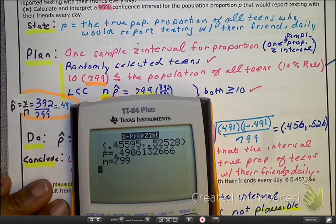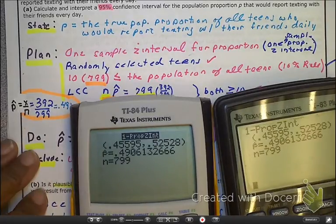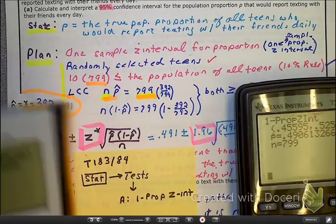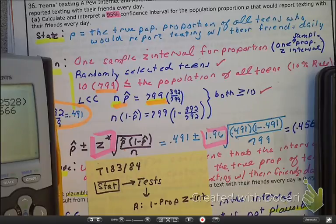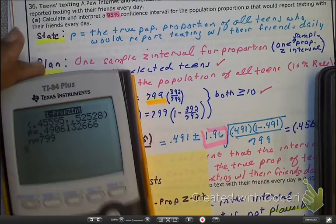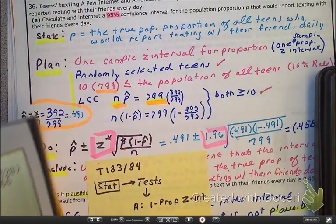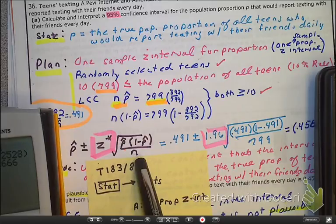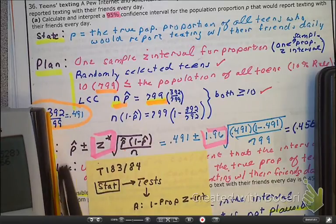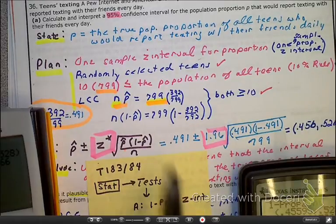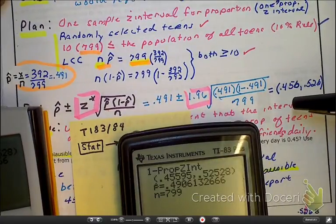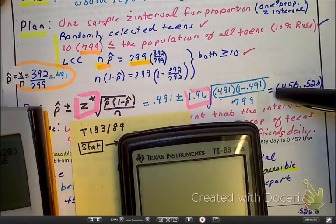Please recognize two things. It does not give you Z-star, and you're going to have to always find Z-star on your own via the chart. Also recognize that you still have to go through your steps: state, plan, including your conditions and assumptions, and conclude. And remember, you still have to have either the naked formula with everything defined on the side, or have the full formula written out. The calculator does the math for us, but you still have to show the math, even though the reality is you don't have to do the math yourself.